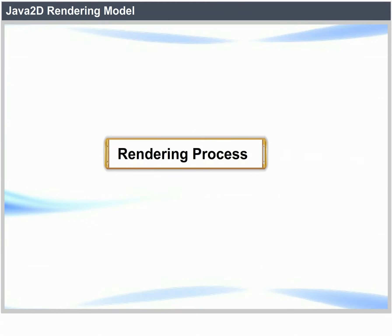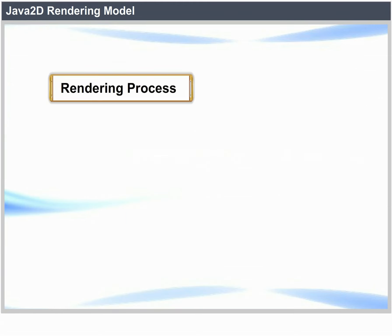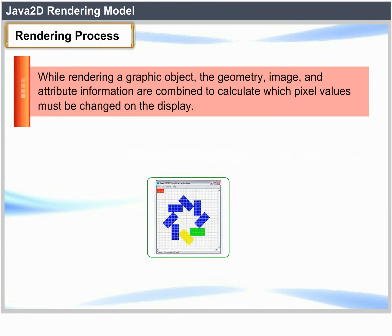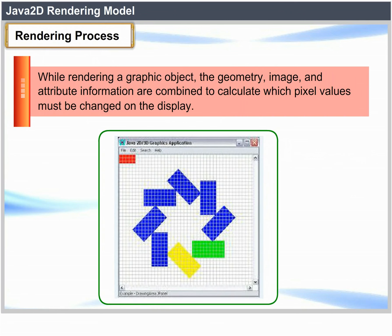Rendering process: While rendering a graphics object, the geometry, image and attribute information are combined to calculate which pixel values must be changed on the display.